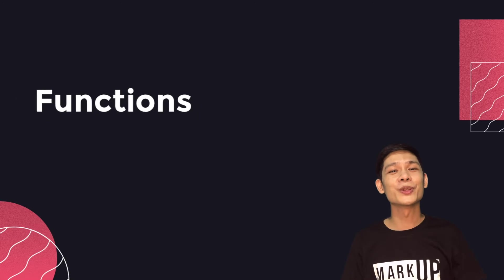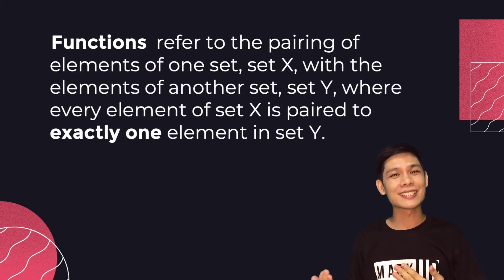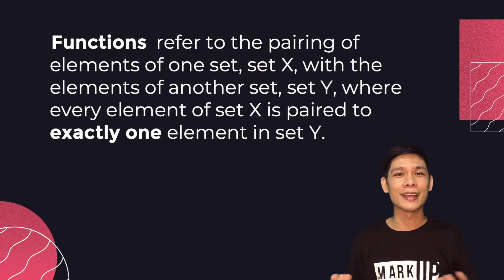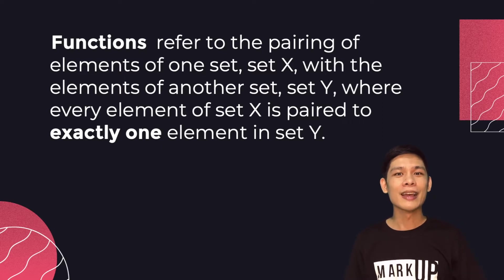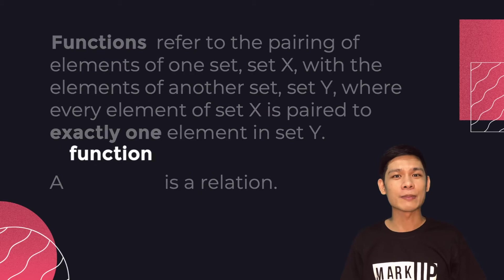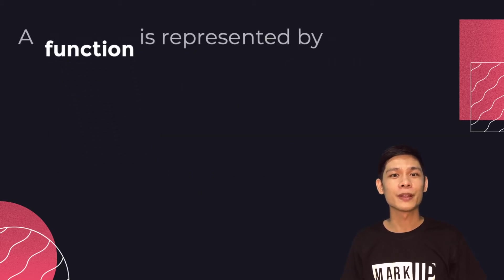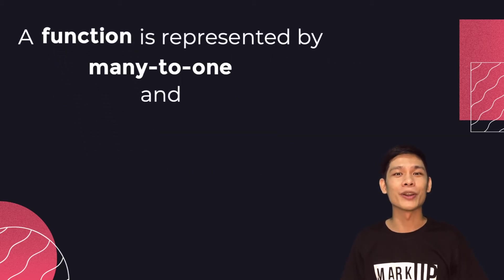Functions refer to the pairing of elements of one set, set X, with elements of another set, set Y, wherein the elements of set X are paired to exactly one element in set Y. Take note that a function is a relation, and out of the four types of relation, a function is represented by one-to-one and many-to-one relations.